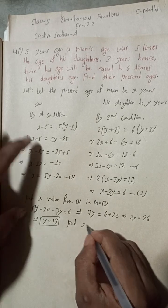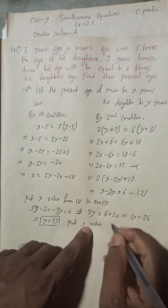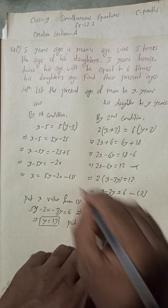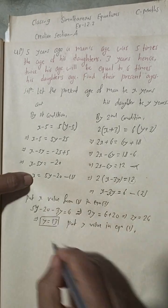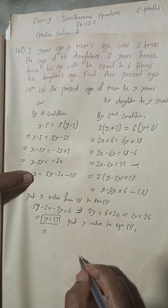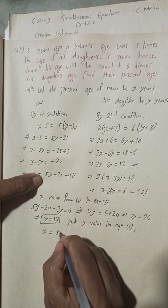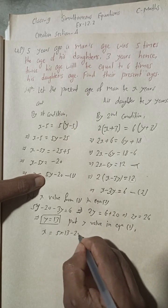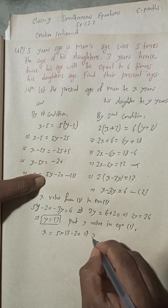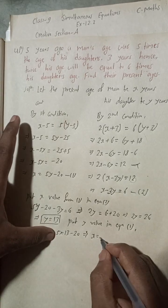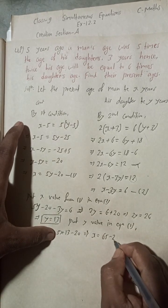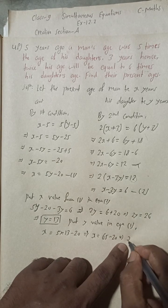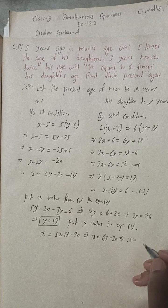Now substitute y = 13 into equation 1: x = 5 times 13 minus 20 = 65 minus 20 = 45. So x = 45.